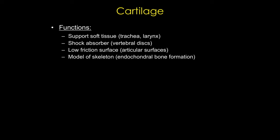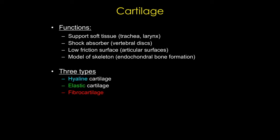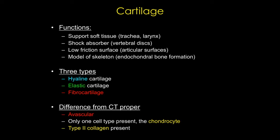During development, cartilage matrices serve as templates for bone development in many locations in the body. There are three types of cartilage: hyaline, elastic, and fibrocartilage. They share common features, but they also have specialized features that allow them to perform specific functions. Cartilage, unlike other connective tissues, is avascular, and that has consequences for both its development and in terms of disease.